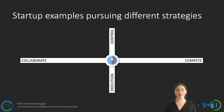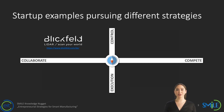To put the entrepreneurial strategy compass to use, we will now classify some actual current startups from the smart manufacturing domain. The startup Blickfeld is a good example of pursuing an intellectual property strategy. It has developed special LiDAR sensors based on patented silicon MEMS mirrors, designed to measure direct distance information in 3D. Blickfeld exploits this technology as a producer and seller of proprietary LiDAR sensors together with detection software for autonomous mobility and IoT applications in various industries.